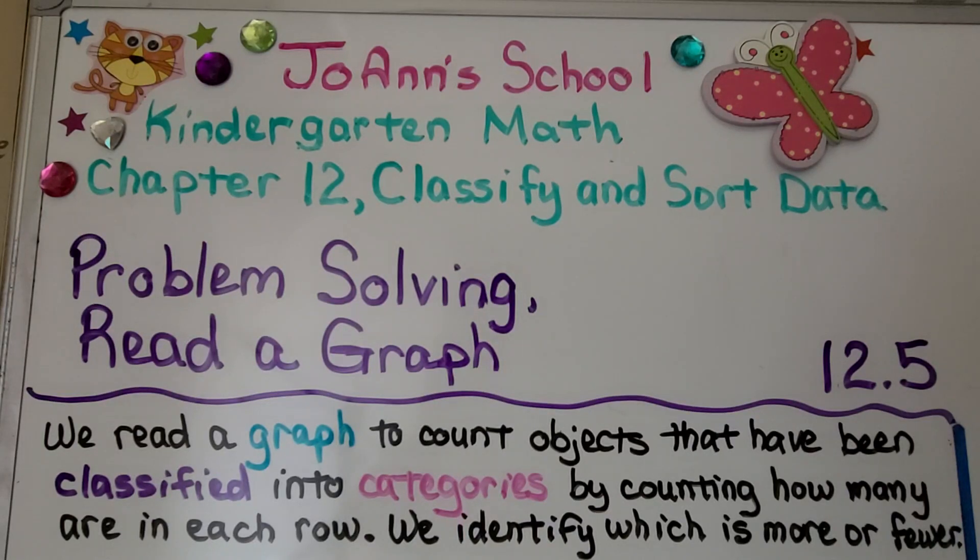Lesson 12.5, Problem Solving, Read a Graph. We read a graph to count objects that have been classified into categories by counting how many are in each row. We identify which is more or fewer.